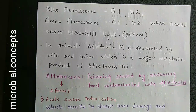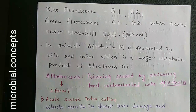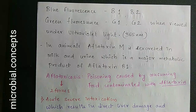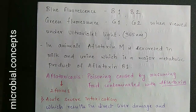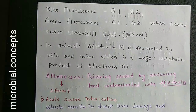In animals, aflatoxin M is secreted in milk and urine and is a major metabolic product of aflatoxin B1. So in animals, if you need to find out whether contamination is present or not, aflatoxin M is tested and analyzed in milk or urine.